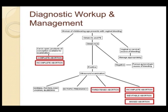This figure is essentially the entire outline of different types of spontaneous abortions that can occur, as well as a differential diagnosis. For each of these, I'm also going to be talking about the management. When a woman comes in with vaginal bleeding, you want to take a thorough history and physical examination, as well as getting a pregnancy test.